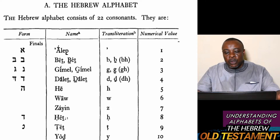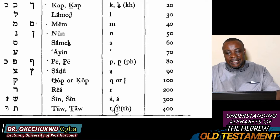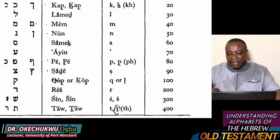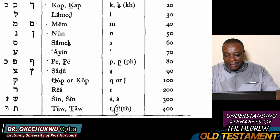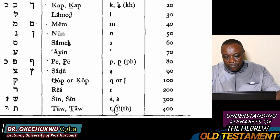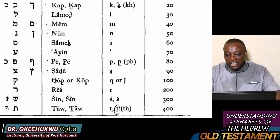Now, when we get from 1 to 10, we don't continue by saying 11, 12, 13 as the next individual letters, because 11, 12, 13 would be compound combinations. So Kaf, as you see on the slide, instead of being 11, is 20. We then go 20, 30, 40. Kaf is 20, Lamed is 30, Mem is 40, Nun is 50, Samek is 60, Ayin is 70, Pe is 80, Tsade is 90, and Qof is 100. Then having reached 100, Resh is 200, Sin or Shin is 300, and Taw is 400.